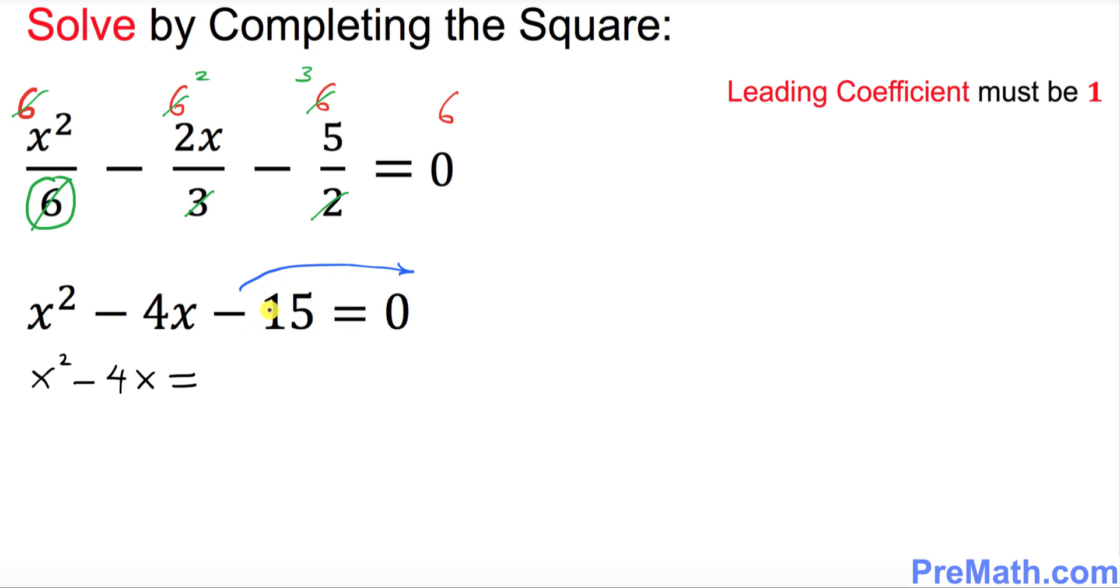This x² - 4x is gonna be on the left hand side equals to, once you move this negative 15 on the other side, it becomes positive 15. Now the next step is I want you to look at the coefficient of x, which is, don't worry about this negative sign, we are just interested in this number, which is 4.